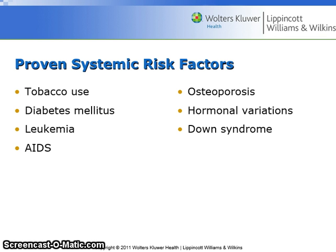Proven systemic risk factors are tobacco use, diabetes, leukemia, AIDS, osteoporosis, hormonal variations, and Down syndrome.